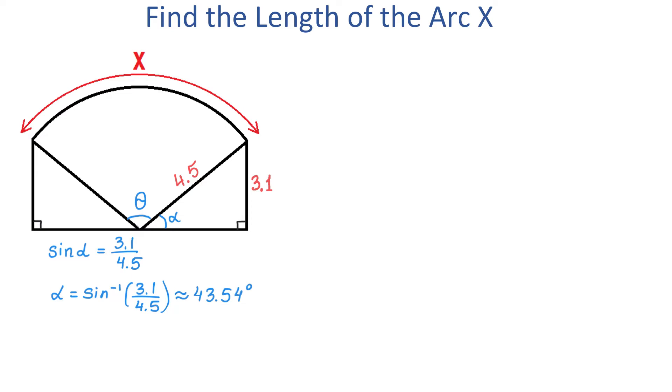So, now we can say that each of these acute angles is approximately 43.54 degrees. And now, because these three angles together make 180 degrees, to find angle theta, we will subtract these two angles. Then theta equals 180 degrees minus 43.54 degrees and minus another 43.54 degrees. Then theta equals 92.92 degrees.